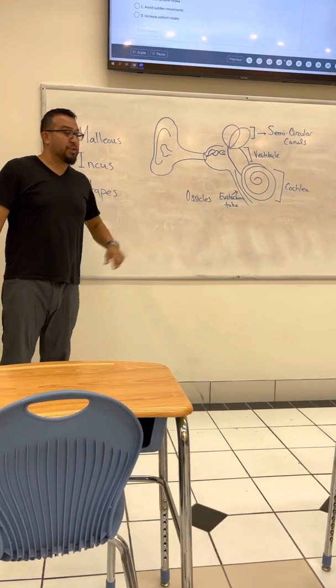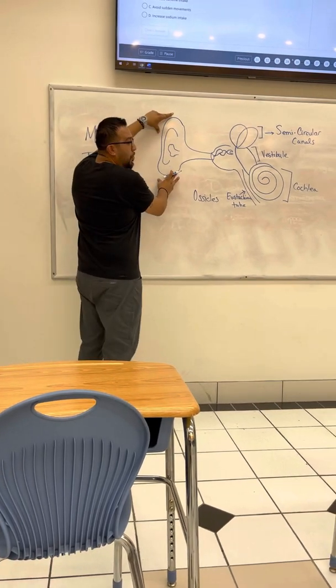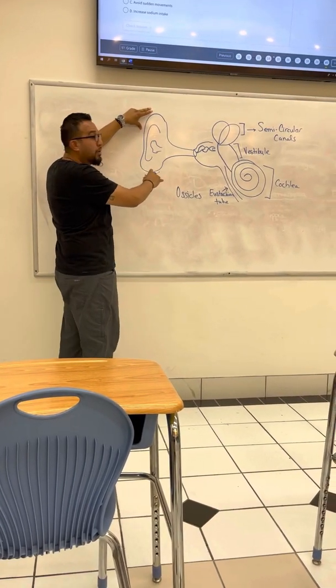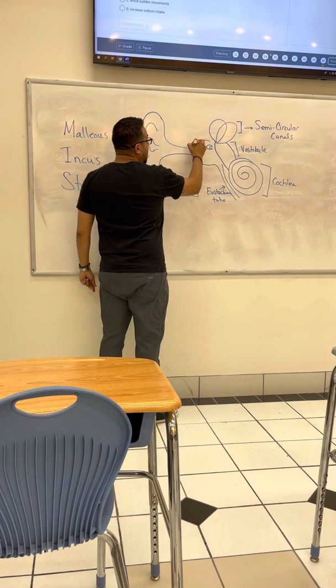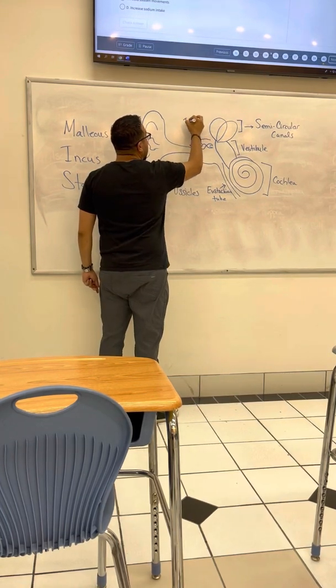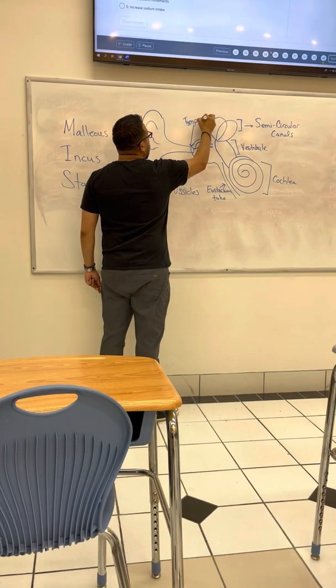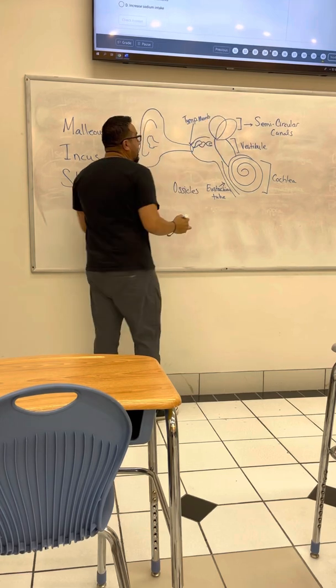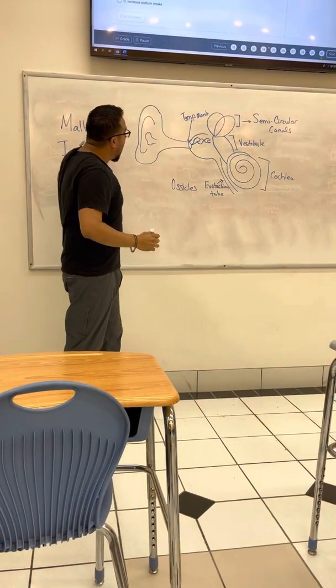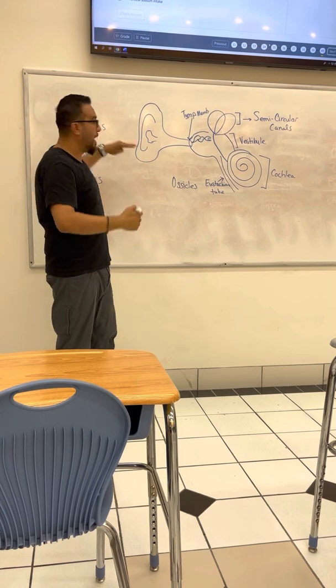Okay, this is the ear. You have the outer ear that starts at the auricle, the pinna, the earlobe, and it ends at the tympanic membrane, that's the eardrum.